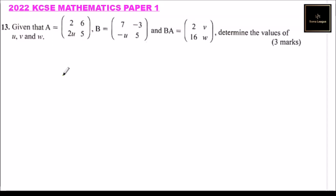So we need to multiply this A and B. So we have our B is 7, minus 3, and we have minus u and 5. So that is B, and this is A, 2, 6, 2u, and 5. So the product, this product, is the same as 2, v, 16, w.